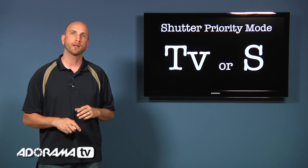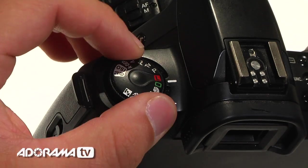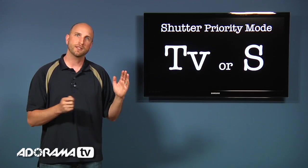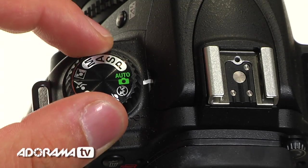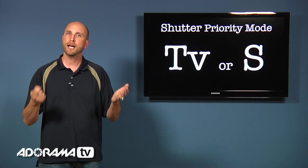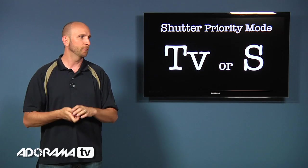Now you can do the exact opposite by using the shutter priority mode. Now on a Canon camera this is TV for time value. And on other cameras it's just S for shutter. And in this mode what you do is you set your shutter speed to a specific speed. And then the camera will figure out how large or how small the aperture opening should be.